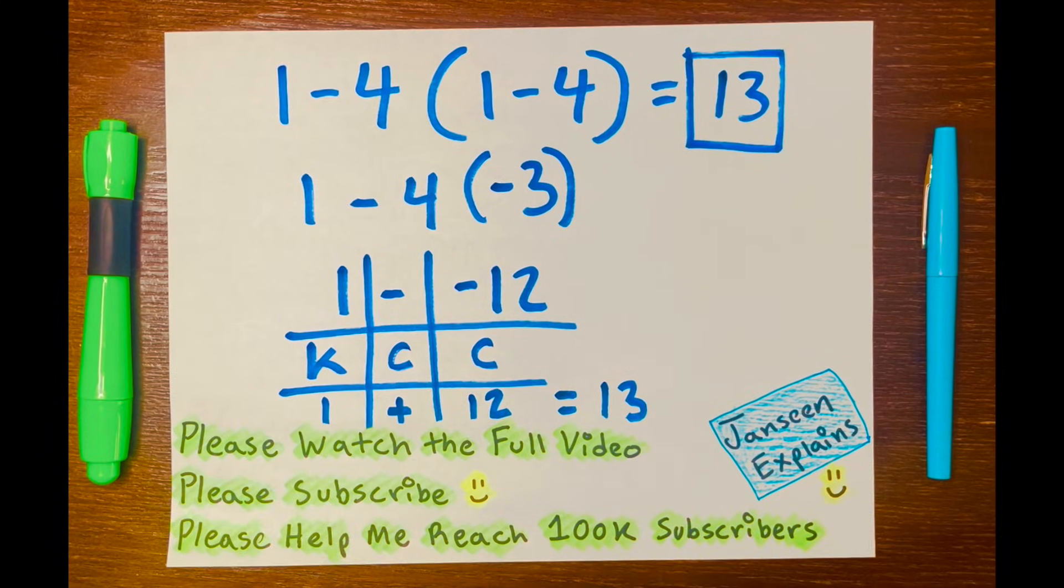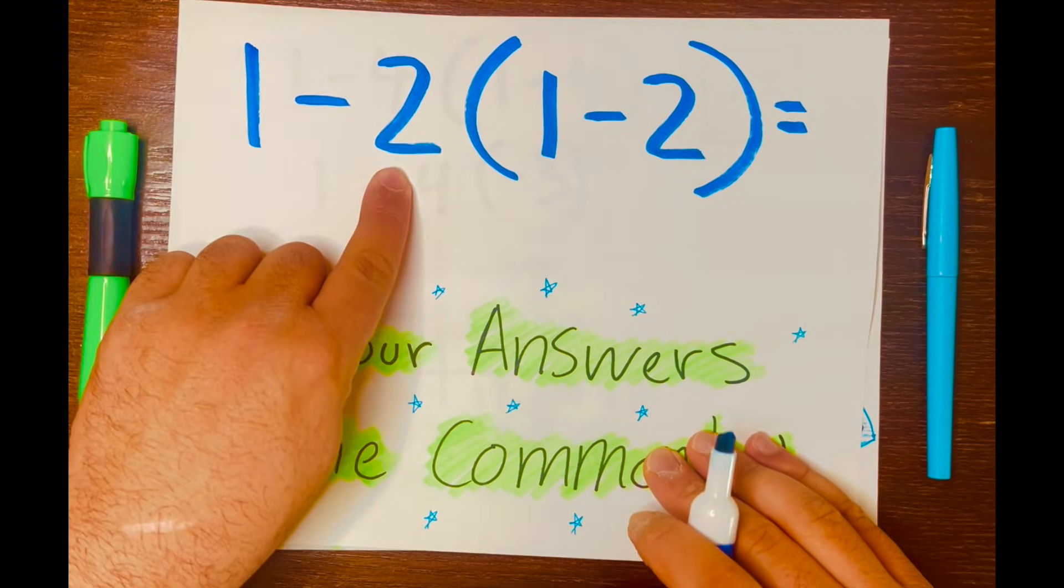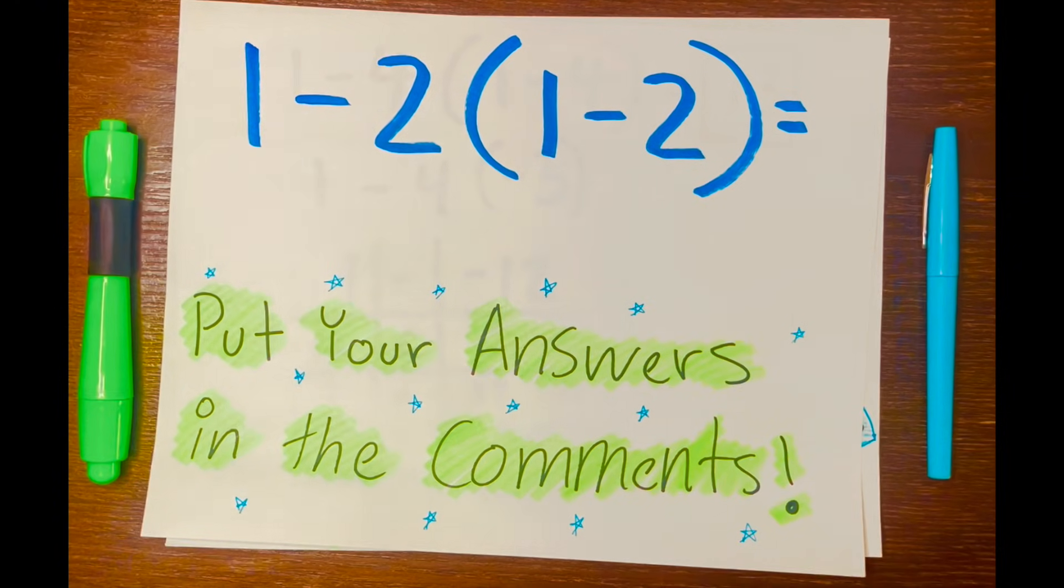And there you go. Now try to solve this problem. 1 minus 2, and then you have 1 minus 2 inside these brackets, or in other words, parentheses. Put your answer in the comment section down below. And thank you for watching, and I'll see you in the next video.